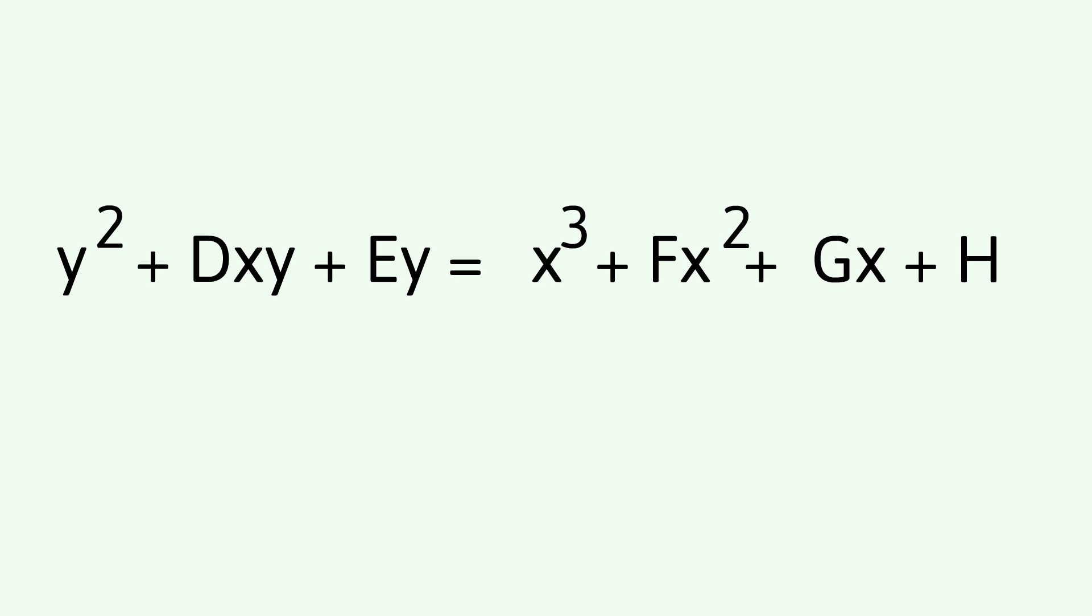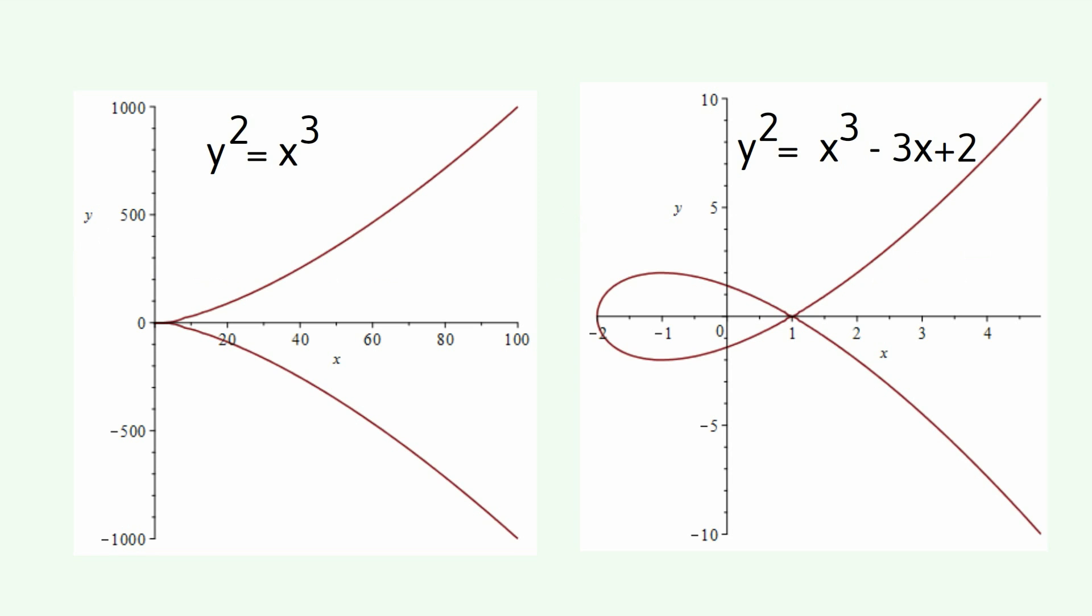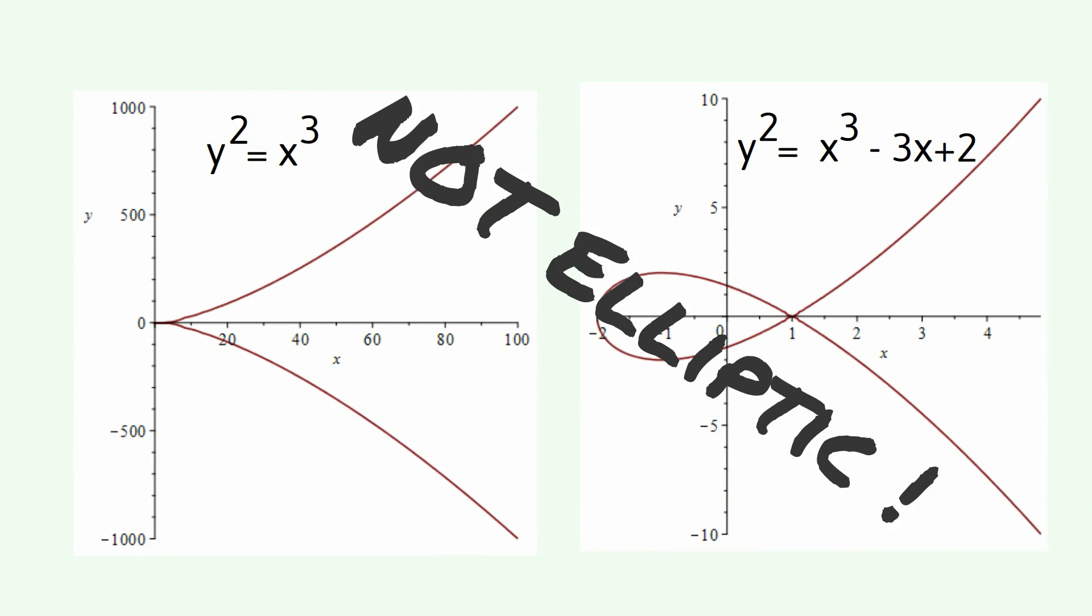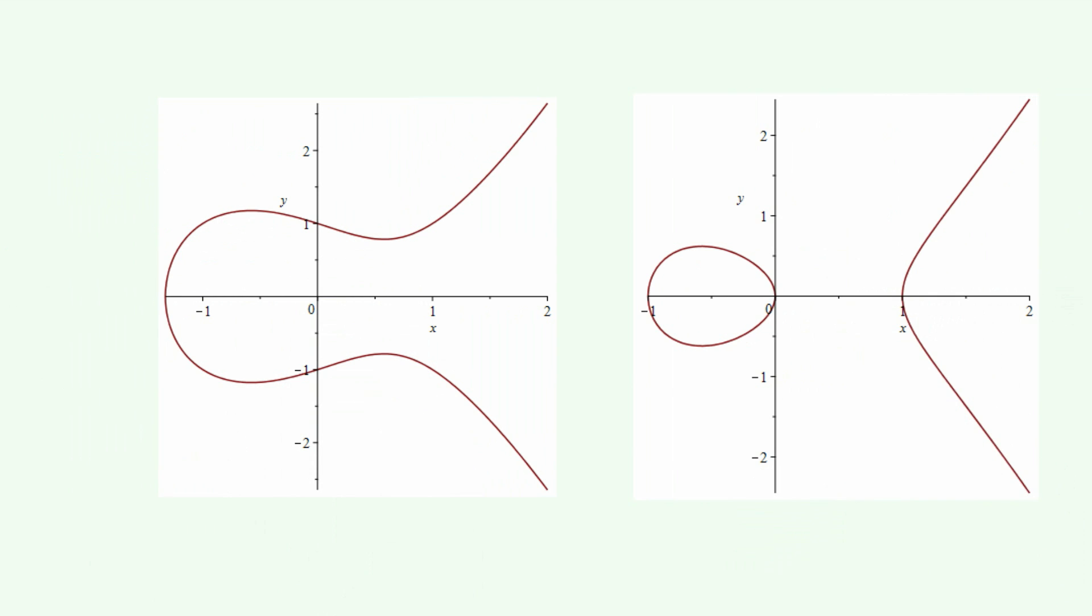For our purposes today, elliptic curves are any curve of this form here, where d, e, f and g can be any integer. However, we specifically exclude curves that have cusps or these sharp points and also curves that intersect themselves. And so, we're typically left with these two sorts of curves, this sort and this sort here.